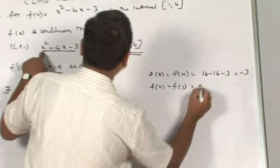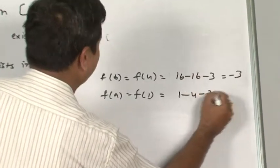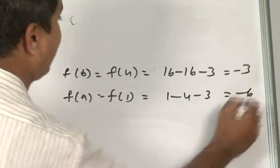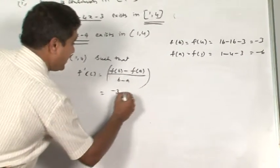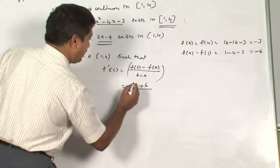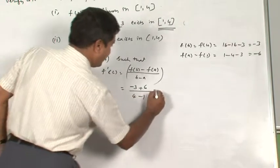is equal to f(1), that is 1 minus 4 minus 3, which is minus 6. So I would be substituting those values: minus 3 minus minus 6, which is plus 6, upon 4 minus 1, that is